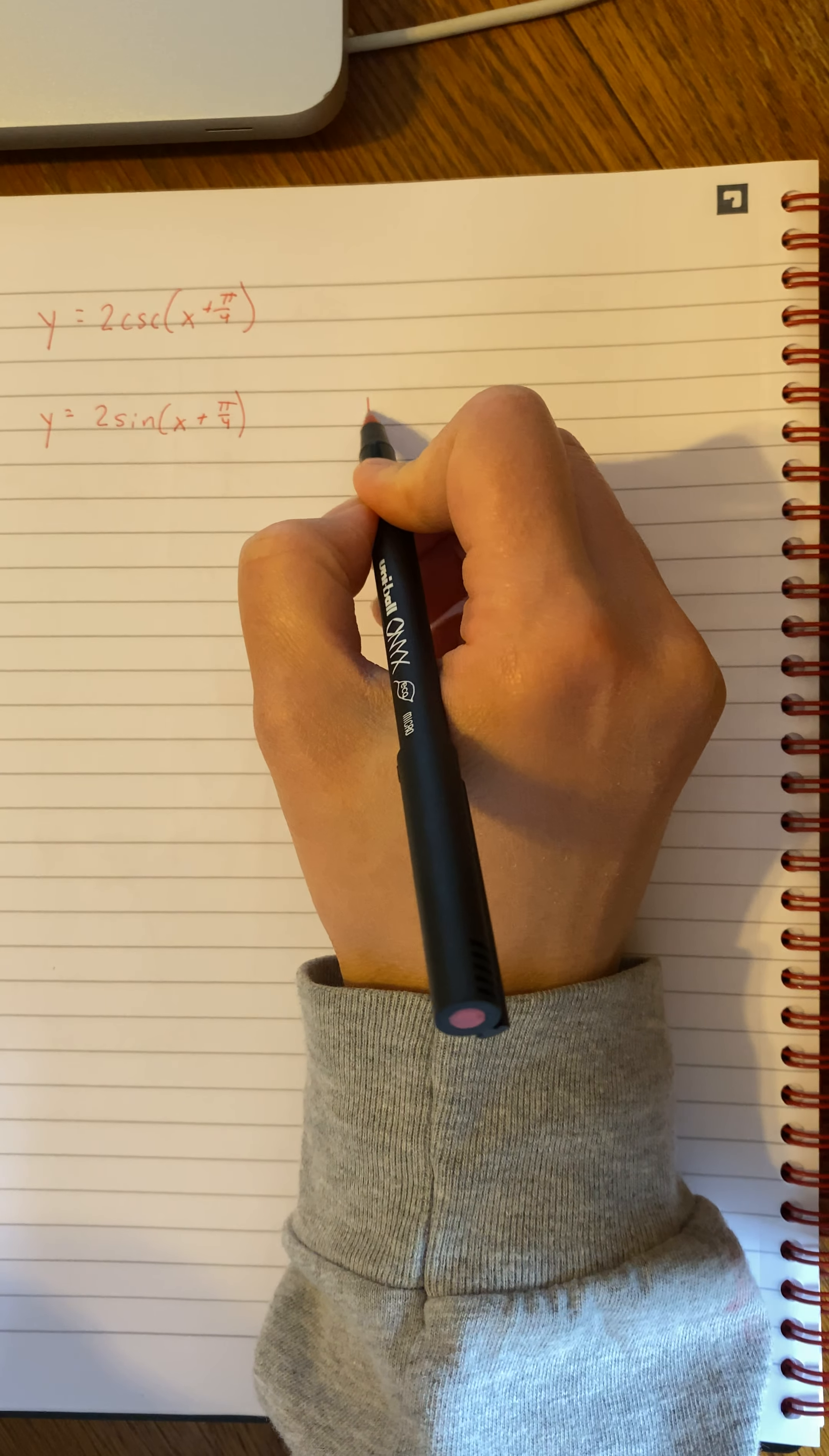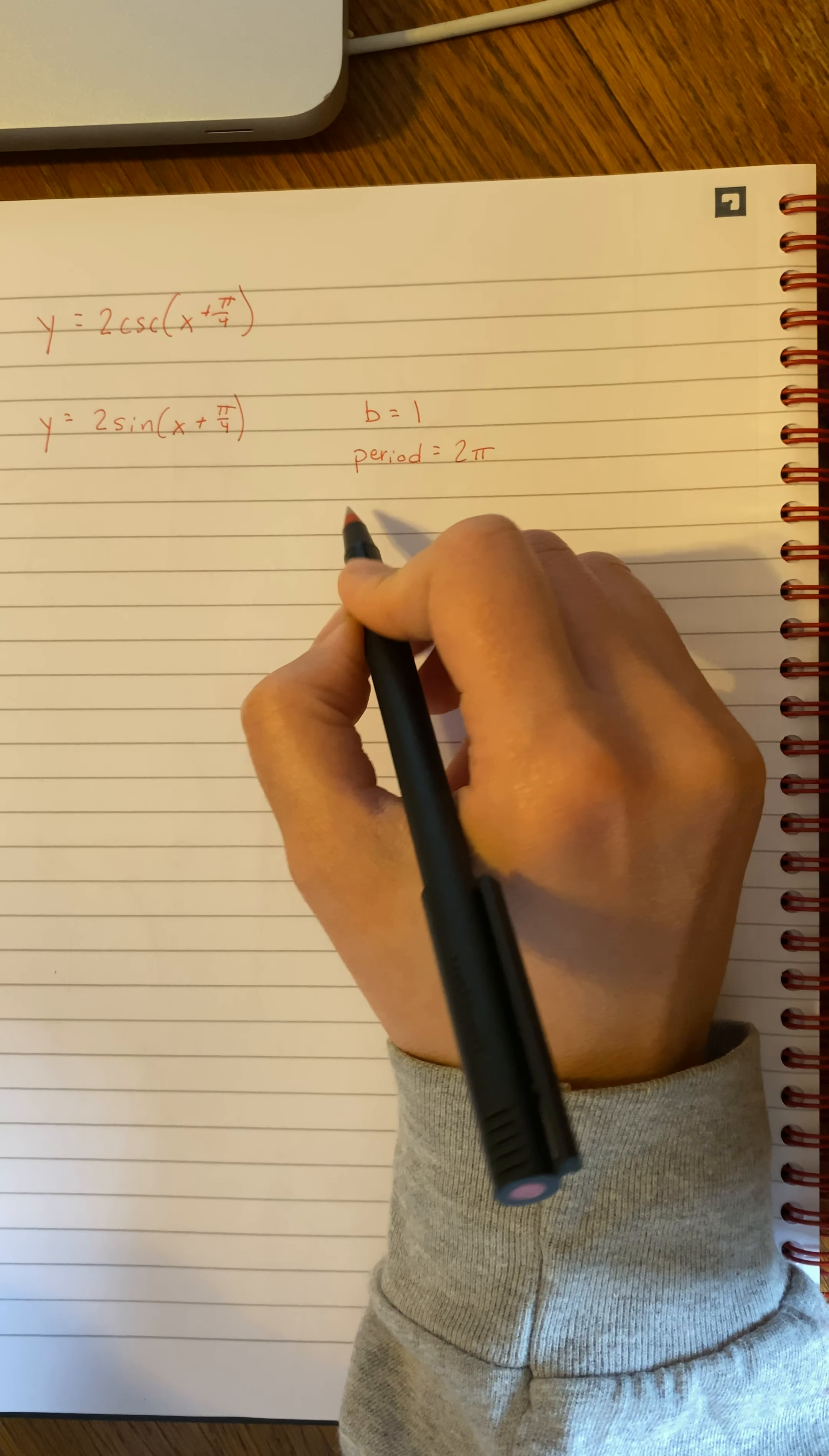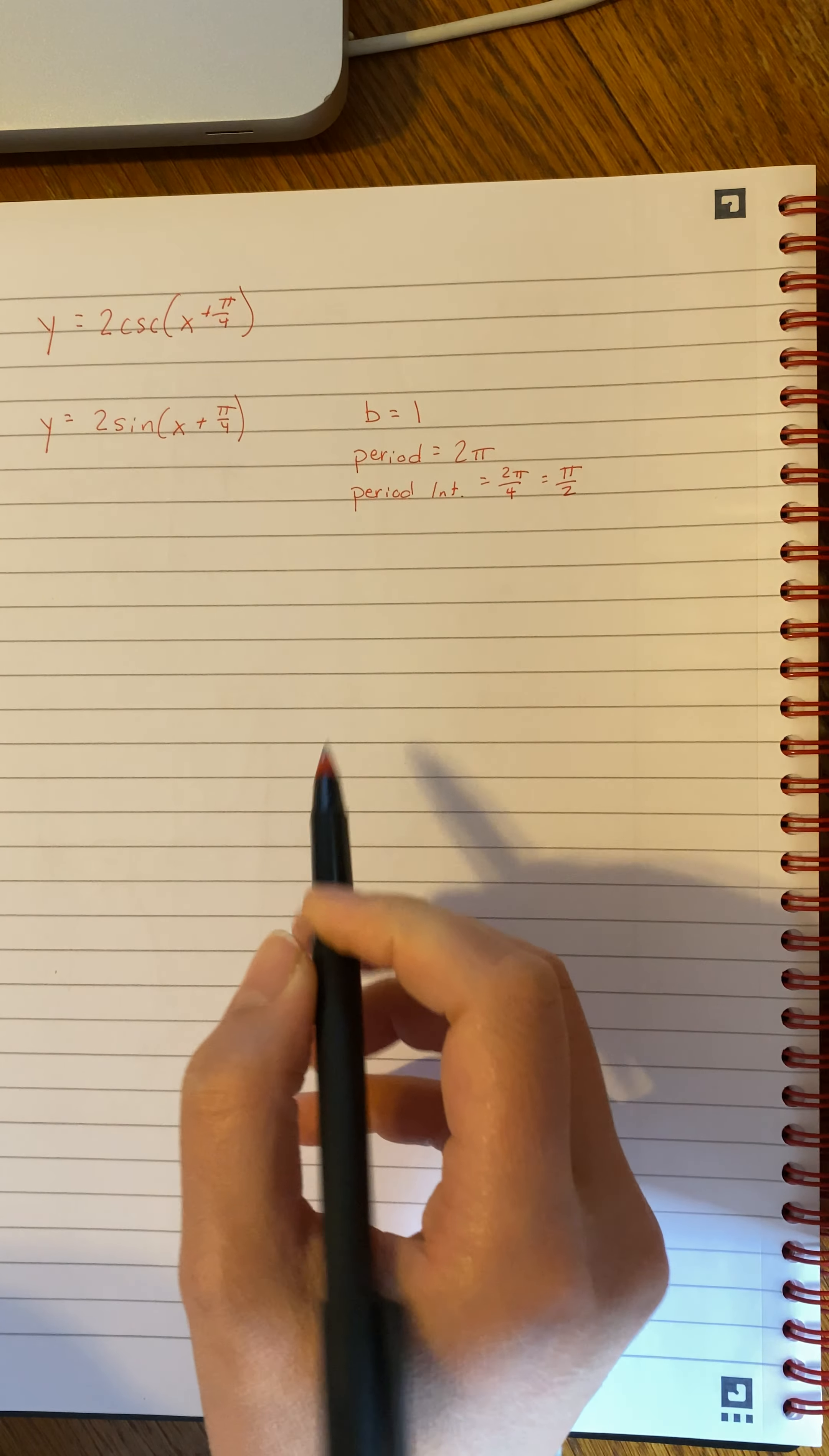Let's first start by finding b. I know b is my coefficient of x, so that's 1. My period would be 2 pi divided by 1, so it's 2 pi. My period interval is going to be 2 pi divided by 4, so my intervals are going to go by pi over 2.